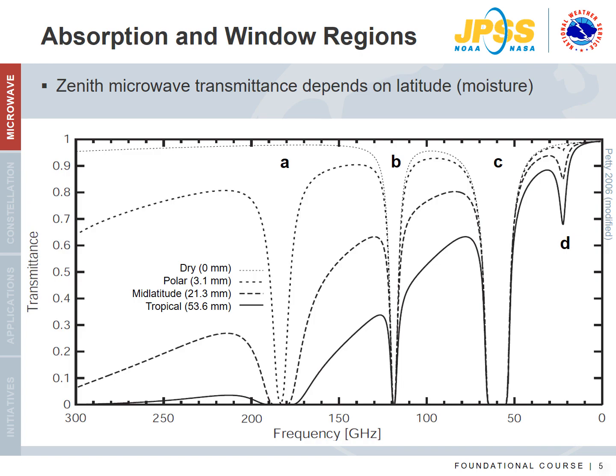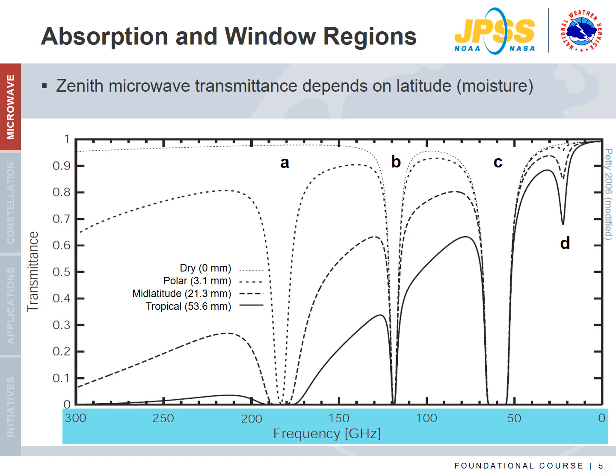Absorption and transmittance of radiation in the atmosphere is dependent on gas molecules that selectively absorb across broadband or very narrow frequencies. This figure shows zenith microwave transmittance of a cloud-free atmosphere for four different global regions based on moisture. Note this is slightly different from the graph in the previous module, as frequency along the x-axis is not on a logarithmic scale.